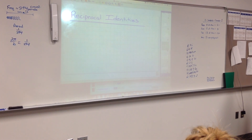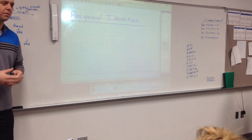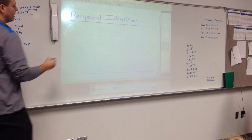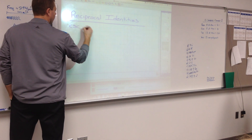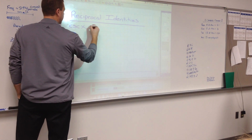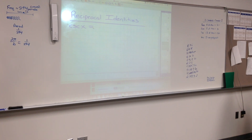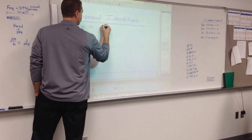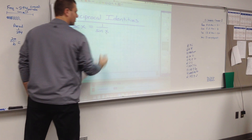I'm just going to go ahead and start quickly through all of the different identities. You actually know some of these already. You know that the cosecant of x is really the reciprocal of sine. So cosecant of x is really equal to 1 over the sine of x.